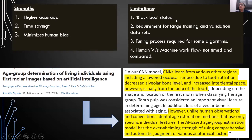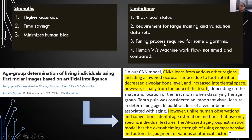The limitations identified included the black box status — in all machine learning and artificial intelligence algorithms we can see the input and the output, but the investigator is unable to judge the basis on which judgment calls are made by these algorithms. There is also a requirement for large training and validation datasets for tuning of these algorithms. The tuning process — maximizing the efficiency of these algorithms — is cumbersome and may be unpredictable. Human versus machine workflow comparison in terms of time has not been detailed in any of these studies.